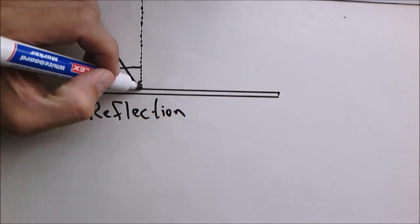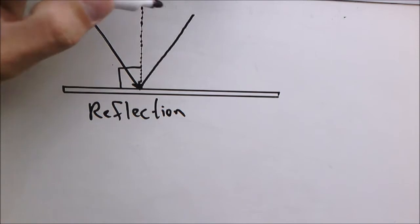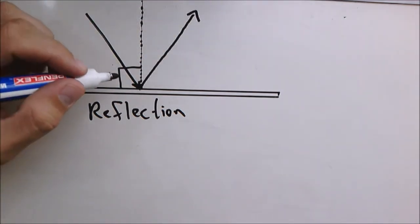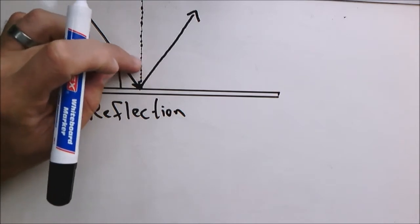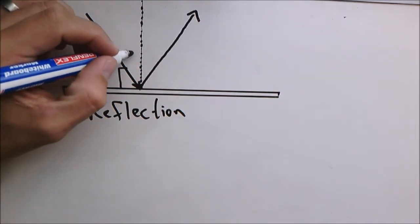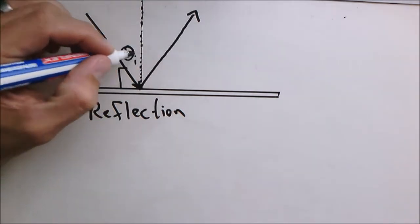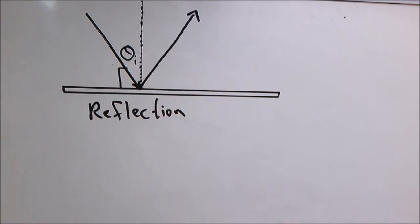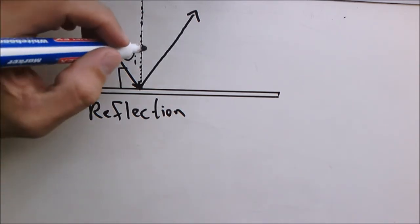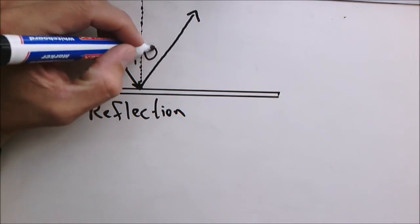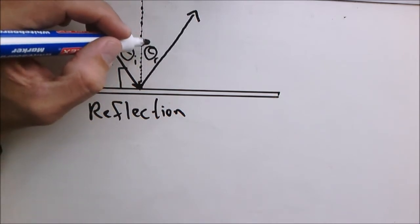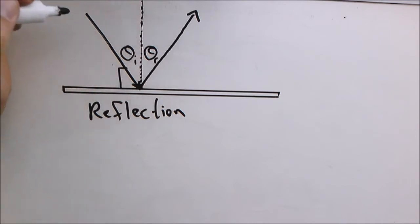Then this ray is the reflected ray, and this angle theta i is the incident angle or the angle of incidence, and then the other angle theta r is the angle of reflection.